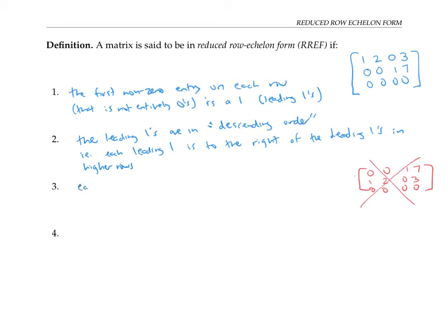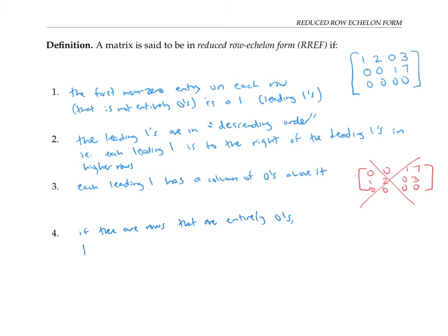The third property is that each leading one has a column of zeros above it — that is, a zero above it in every row above it. In this example, the first leading one has no rows above it, and the second leading one has only one row above it with a zero there. The final condition is that any rows that are entirely zeros must be at the bottom of the matrix. This example satisfies all four conditions, so it is in reduced row echelon form.